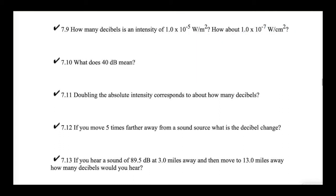Problem 7.10: what does 40 decibels mean? When we have a nice multiple of 10 like this, 40 decibels means four zeros — so it means 10,000 times greater than the threshold of hearing.